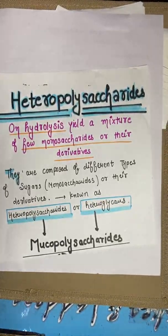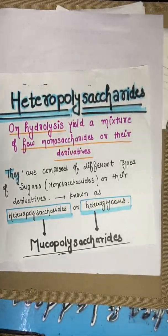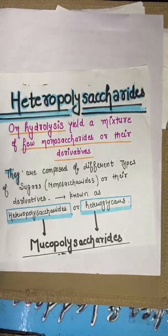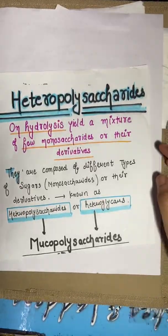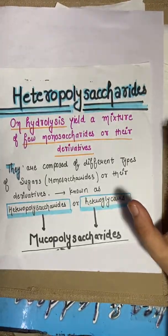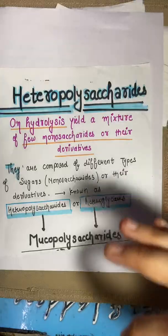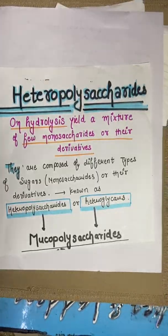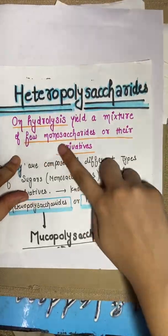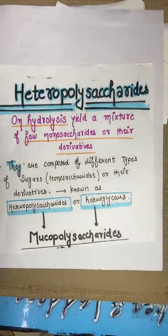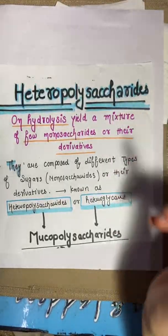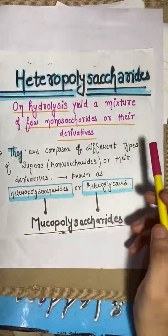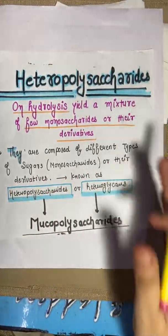In the last video we covered homopolysaccharides. In this video we are going to study heteropolysaccharides. The heteropolysaccharides are made of different monosaccharides and derivatives. When we hydrolyze them, we get a mixture of a few monosaccharides and their derivatives. These are made of different types of sugars and their derivatives.